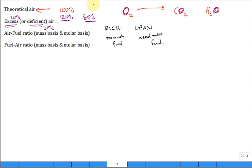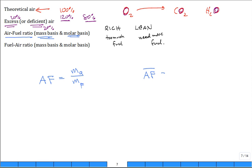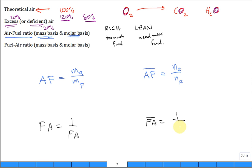The other measure we want to talk about is air-to-fuel ratio. You can do it on a mass basis or a molar basis. On a mass basis, it's the mass of air divided by the mass of fuel. On a molar basis — denoted with an overbar — it's the number of moles of air to the number of moles of fuel. There's also fuel-to-air ratio, which is simply the reciprocal of air-to-fuel ratio, on both a mass and molar basis.